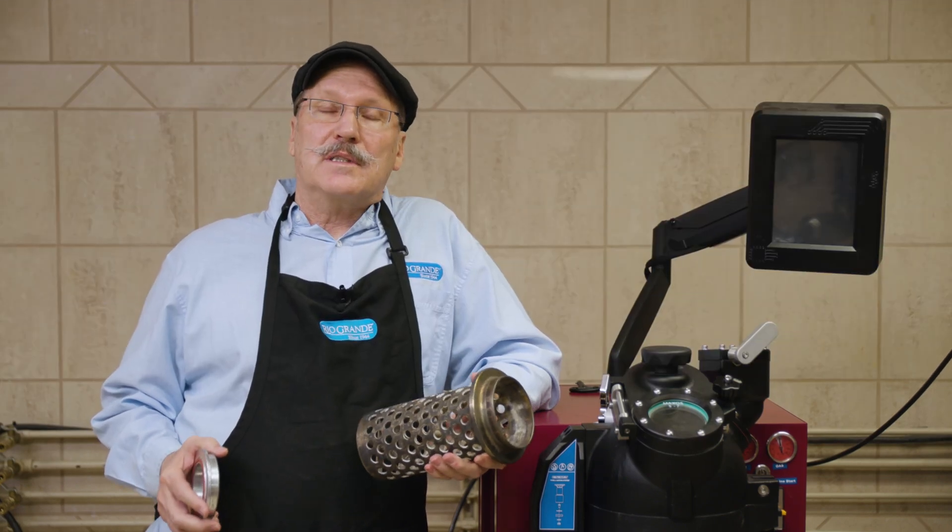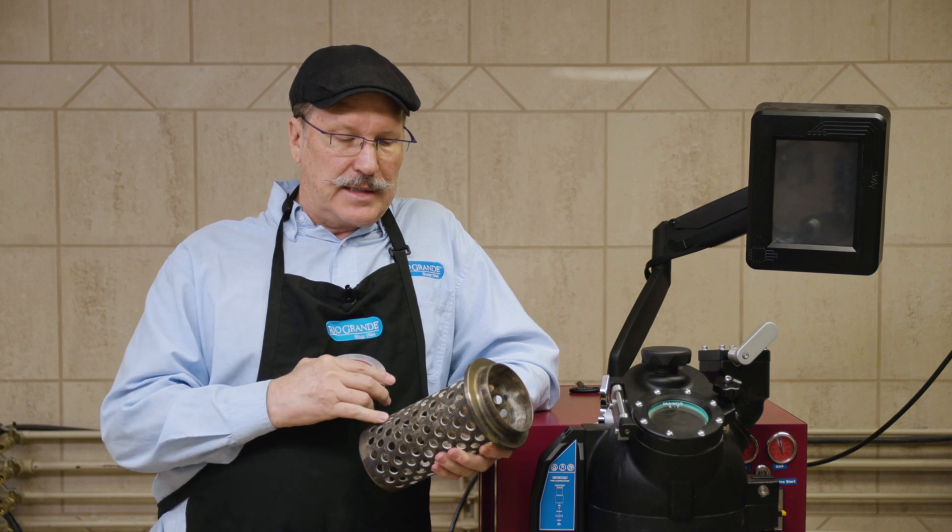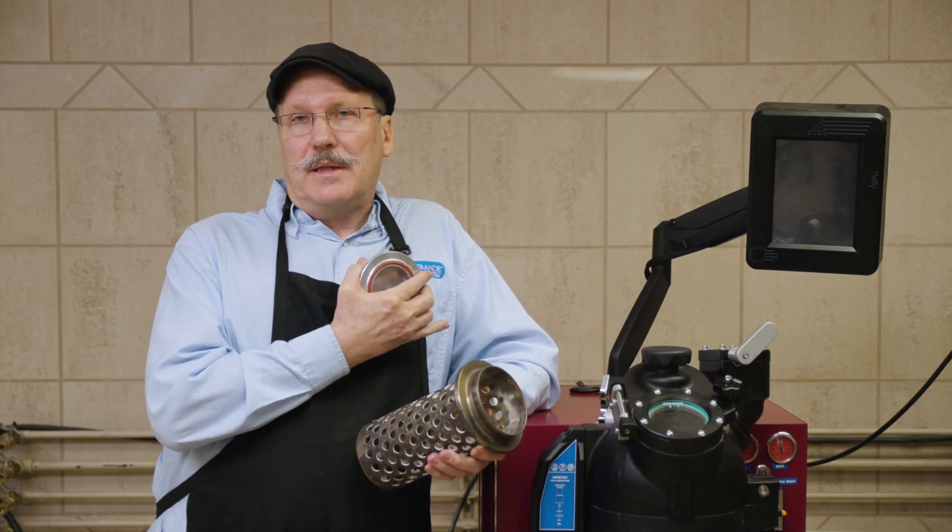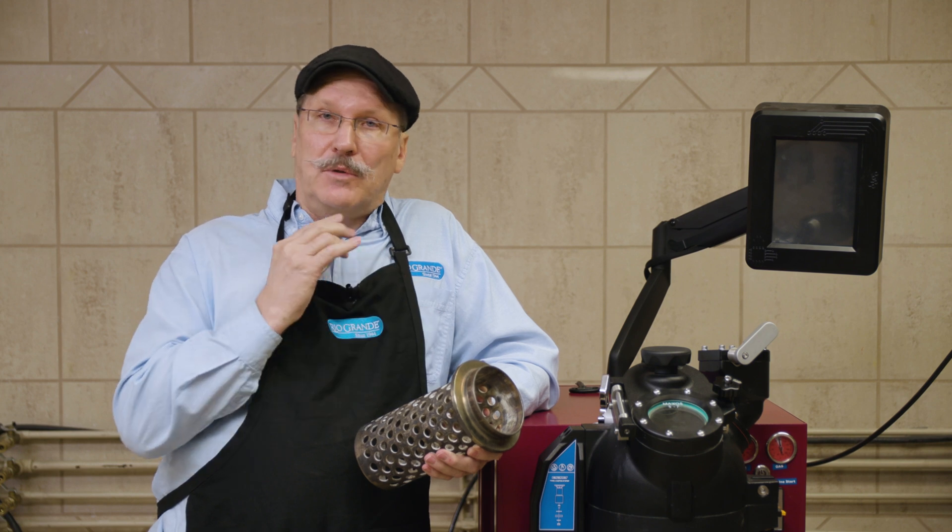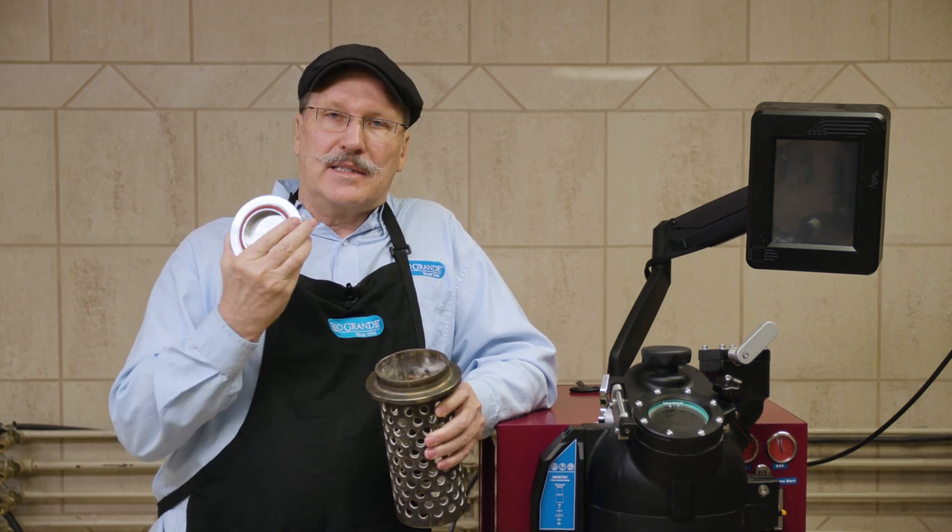So there are two possible reasons to get this error code. The first is a blowout in your flask or a hole in the flask, and the second could be a leak in the machine itself. In order to test for either one, you're going to need a four inch diameter flask and this flask test pressure plate which came in your startup kit.